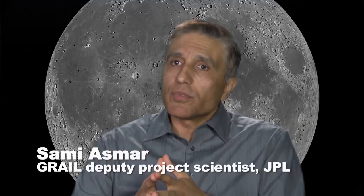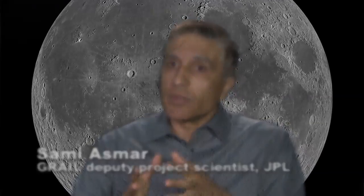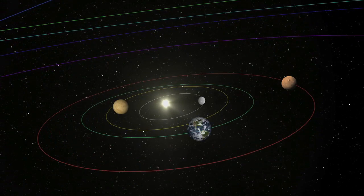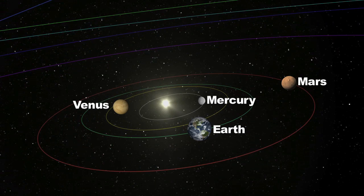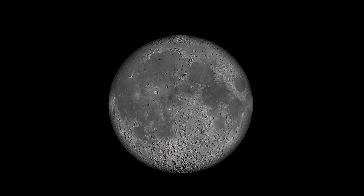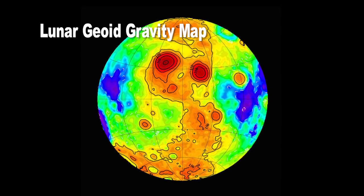Understanding how the Moon has developed would really help us in understanding how the other planets in the inner part of the solar system, the rocky planets, have also developed. The purpose of the GRAIL mission is to investigate the interior structure of the Moon.